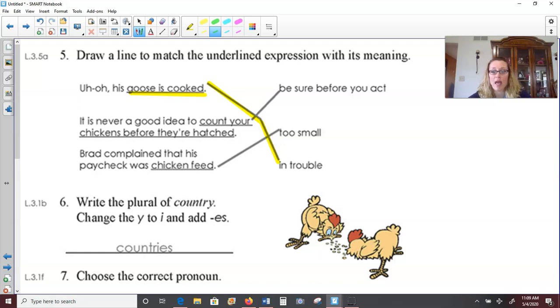It is never a good idea to count your chickens before they're hatched. You know, when you think about it, you can count all the eggs and you expect chickens to come out of them. But sometimes there might be a dud in the nest. And so you might think you're going to get 10 chickens, but you might only get eight or nine. Things happen. So that kind of means to be sure before you act. So be sure of something before you act on it or start relying on it to be true.